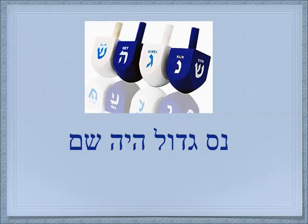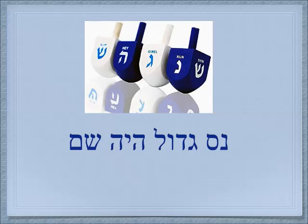Gadol is big. Hayah is was. And Sham means there. Ness Gadol Hayah Sham — a great miracle happened there. But it happened in Israel, so if you go to Israel and you find a dreidel — the Hebrew word is Sivivon, because it's Sovev, it goes around and around — the dreidels have the last letter P. Ness Gadol Hayah Po — a great miracle happened here.